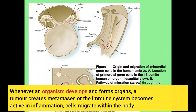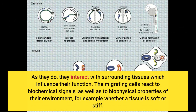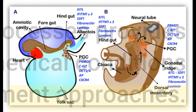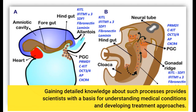Whenever an organism develops and forms organs, a tumor creates metastasis, or the immune system becomes active in inflammation, cells migrate within the body. As they do, they interact with surrounding tissues which influence their function. The migrating cells react to biochemical signals as well as to biophysical properties of their environment — for example, whether a tissue is soft or stiff. Gaining detailed knowledge about such processes provides scientists with a basis for understanding medical conditions and developing treatment approaches.